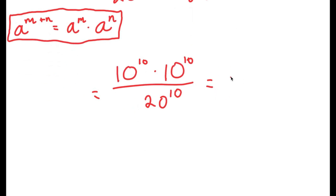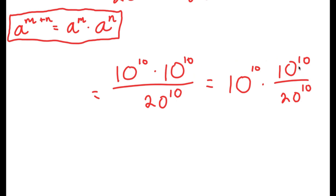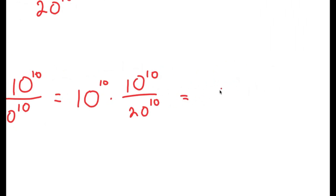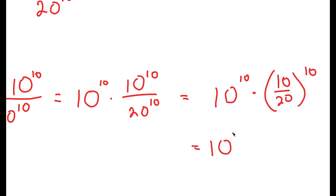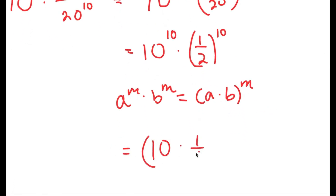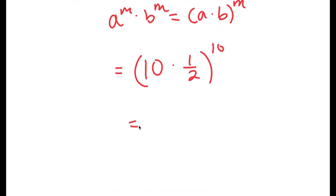I group this as 10 to the power of 10 times (10 to the power of 10 over 20 to the power of 10), using the property a^m over b^m equals (a over b)^m. This turns into 10 to the power of 10 times (10 over 20) to the power of 10, which equals 10 to the power of 10 times (1/2) to the power of 10. Finally, using a^m times b^m equals (a times b)^m, this becomes (10 times 1/2) to the power of 10, which equals 5 to the power of 10.